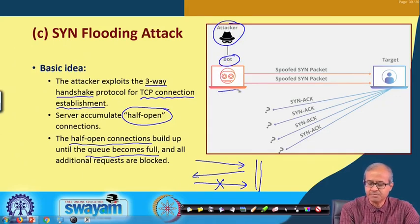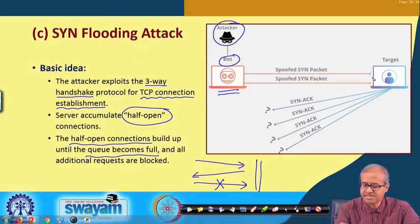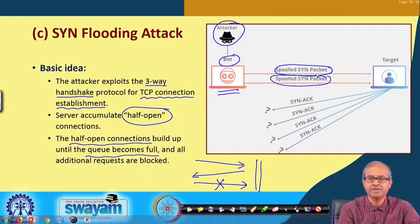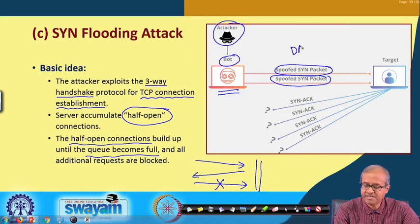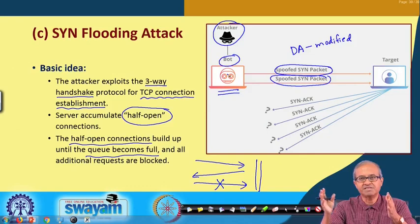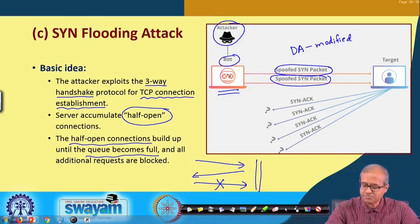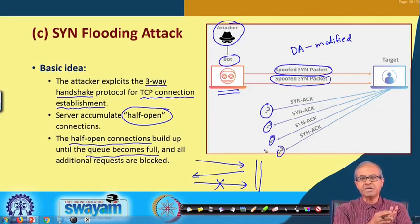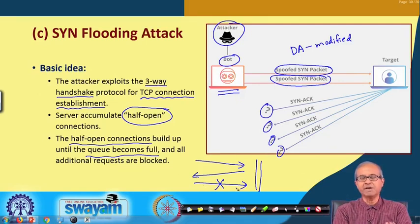The attacker is controlling this bot, and the bot will be sending spoofed SYN packets. Spoofed SYN packets means the source addresses are modified — because if they are not spoofed, all the responses will come back to this bot. But the bot is giving arbitrary IP addresses as the source address, so the responses will be going to some other places. Because those other places did not initiate the connection, they will not be sending back the third response.